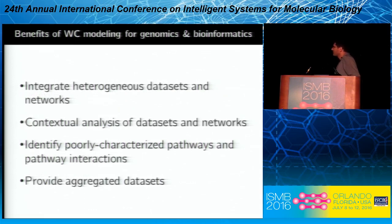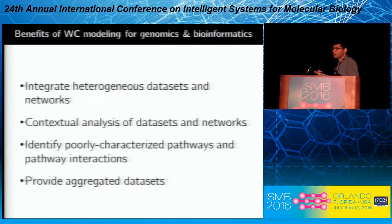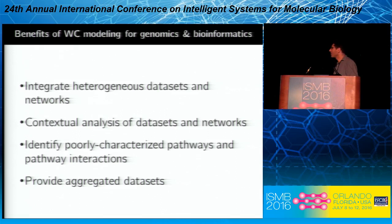We're also going to need networks that cover not only the best-studied pathways like transcription and transcriptional regulation, but other pathways like RNA modification and DNA repair — networks for every pathway inside a cell. What wholesale modeling can offer genomics and bioinformatics is the ability to integrate heterogeneous datasets and networks into a single model, and through that, potentially reanalyze datasets in the context of other pathways from a dynamical perspective focused on interactions among pathways.